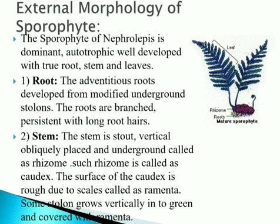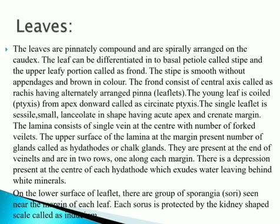The leaves are pinnately compound, like the neem leaf, and are spirally arranged on the caudex. The leaf is differentiated into the basal petiole called the stipe and the upper leafy portion called the frond. The stipe is smooth, without appendages, and brown in color. The frond consists of a central axis called the rachis, with alternate arrangement of pinnae (leaflets).